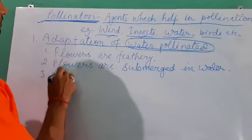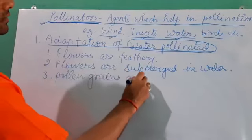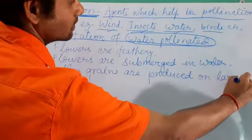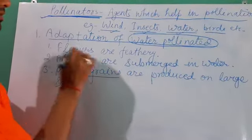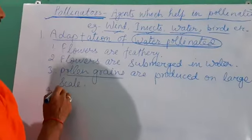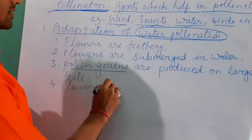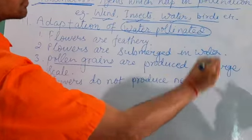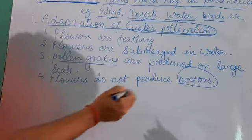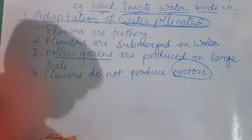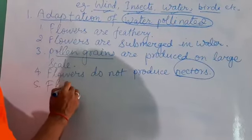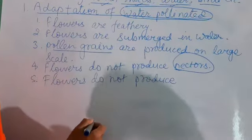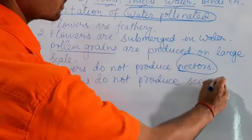Third adaptation: pollen grains are produced on a large scale. Water pollinated flowers do not produce nectar or flower juice.